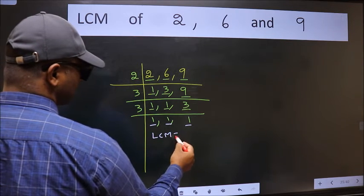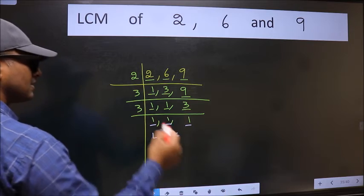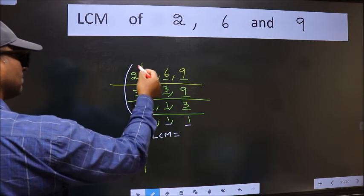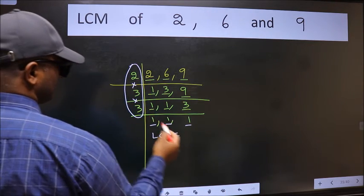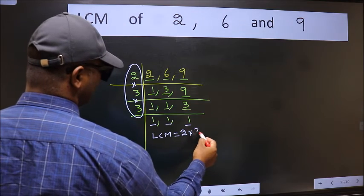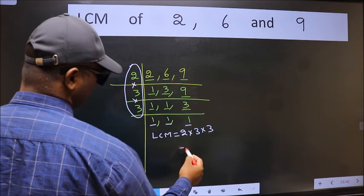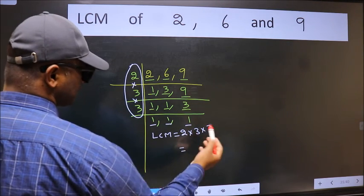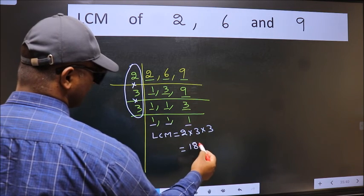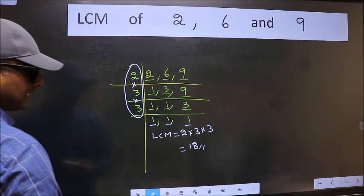So our LCM is the product of these numbers. That is 2 into 3 into 3. When we multiply these numbers, we get 18 is our LCM.